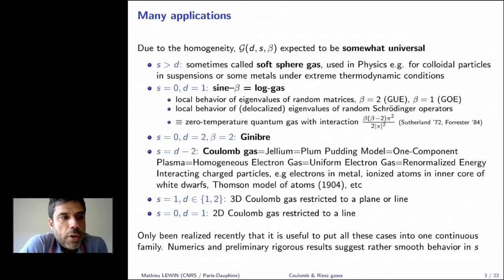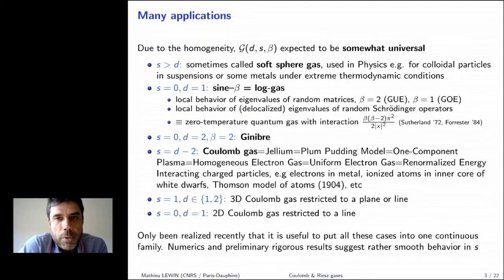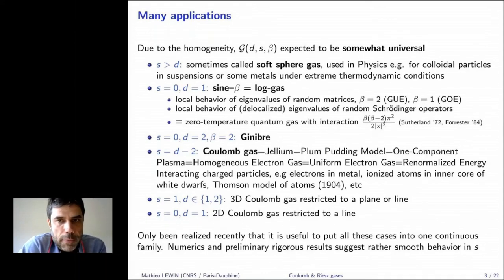This family of point processes contains applications in many different areas of physics and mathematics, and is expected to be somewhat universal — which explains why it appears everywhere. In physics, s > d is sometimes called the soft sphere gas (since s → ∞ gives hard spheres), and it describes many interesting physical systems.